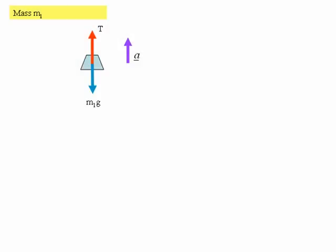Let's start this problem by drawing a free body diagram for the first hanging mass, m1. Using the usual technique, ask yourself what forces are acting on that mass. There's the force of gravity acting downwards — that's m1g — and there's the tension in the string acting upwards, T.